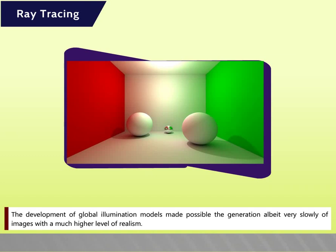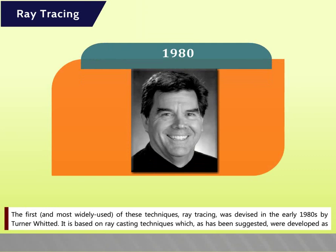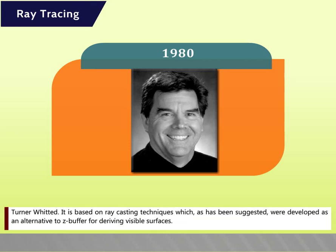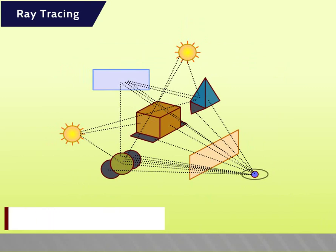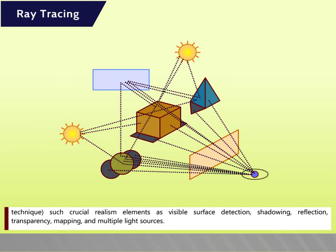The development of global illumination models made possible the generation of images with a much higher level of realism. The first and most widely used technique, ray tracing, was devised in the early 1980s by Turner Whitted. It is based on ray casting techniques developed as an alternative to the z-buffer for deriving visible surfaces. The attraction of ray tracing is that it incorporates such crucial realism elements as visible surface detection, shadowing, reflection, transparency, texture mapping, and multiple light sources.